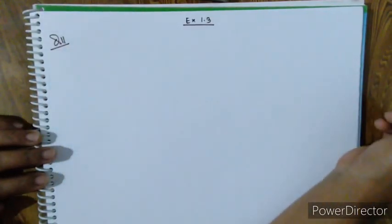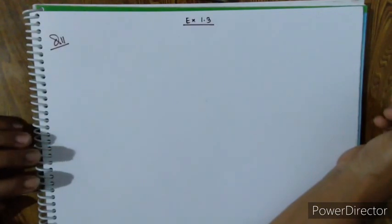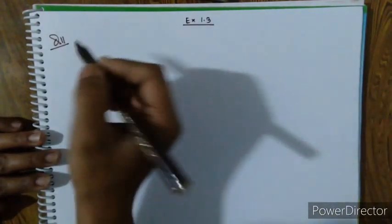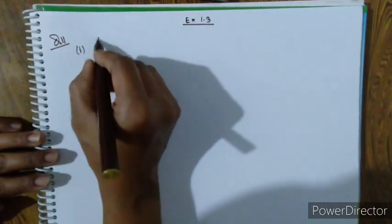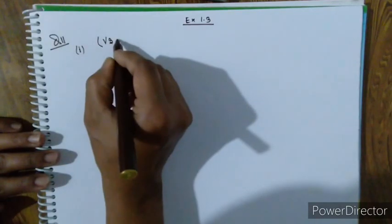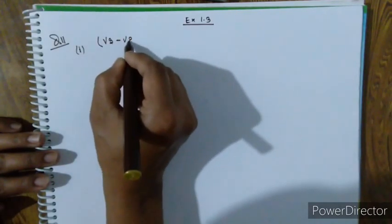The exercise follows our rationale. Rationale number 9, they are following. Root number 1 — let's see. Root 3 minus root 2.